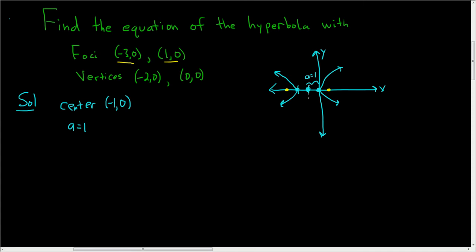The distance from the center to the foci is c. So in this problem c is equal to 2. So we have a equals 1 and c equals 2.